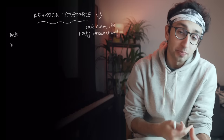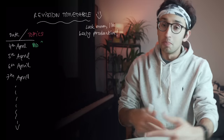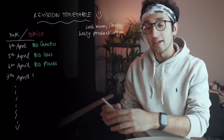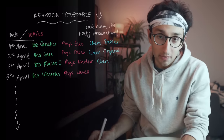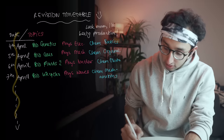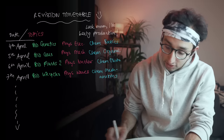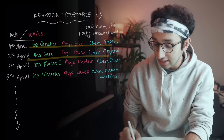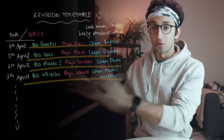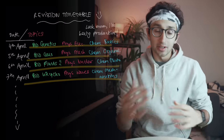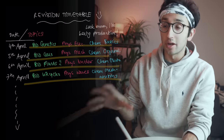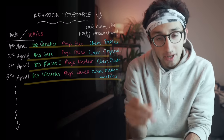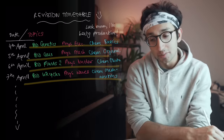Prospective means looking forward and retrospective means looking back. What most people think of as a revision timetable tends to be prospective — you've got your dates down one column and the topics you're going to revise each day in your rows. The idea is you predict in advance what topics you want to be doing. But this method has some problems.